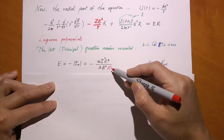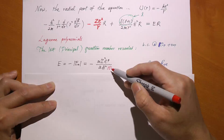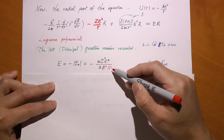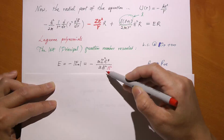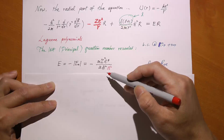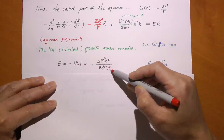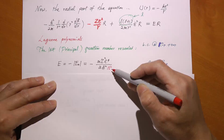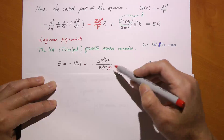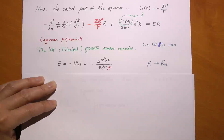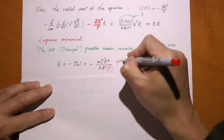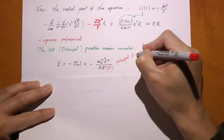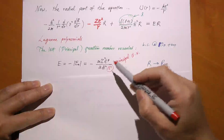E must equal some constant divided by n squared, where n must be an integer. This looks familiar — this is the expression for the energy eigenvalues in the Bohr model for the hydrogen atom. So we have indeed rediscovered the quantization of energy with the exact same expression. Quantum mechanics gives us the same solution as the energy eigenvalue of the successful Bohr model. This n is our last quantum number — we have three quantum numbers in three-dimensional space. We already know m and l; here is the third and last quantum number n, called the principal quantum number.